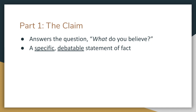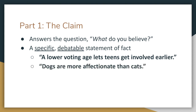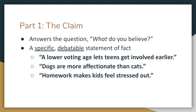It needs to be a claim that you think you can back up and convince people is true, but not something that's really obvious. For example, for the first resolution, a claim could be: 'A lower voting age lets teens get involved in the political process earlier.' For the dog and cat resolution, you could claim: 'Dogs are more affectionate than cats.' For the banning homework resolution, you could claim: 'Homework makes kids feel stressed out.'